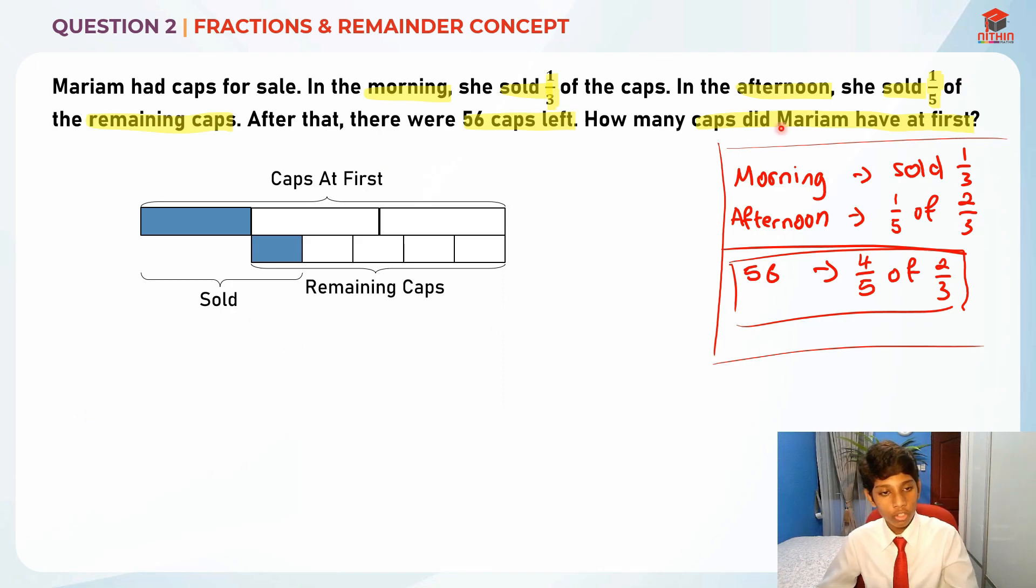We have drawn a model based on this. Basically in the morning she sold one third of her caps, so the shaded part is what she sold. The blue color part, this is actually what she sold.